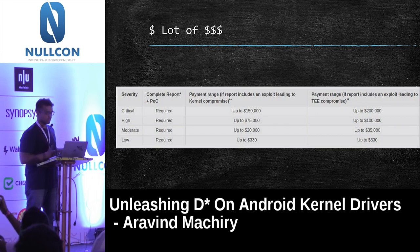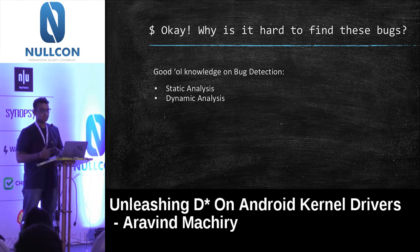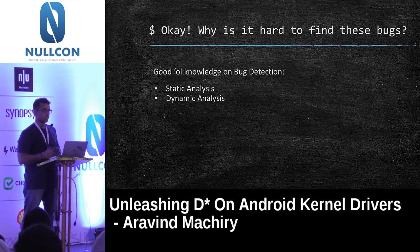Ironically, there are also a lot of bugs. So the basic question is: why is it hard to find these bugs? Vulnerability detection is an extensive area of research — people have been doing it for three decades. Most techniques fall into two broad categories: static analysis, where you analyze code without running it, and dynamic analysis, where you run the code.